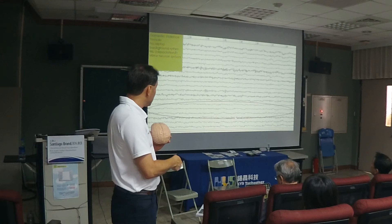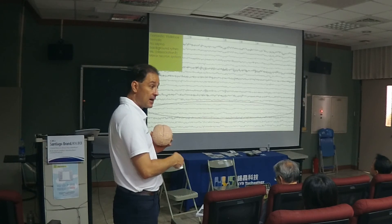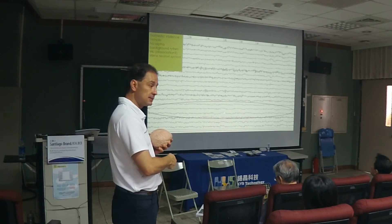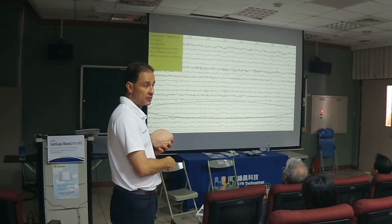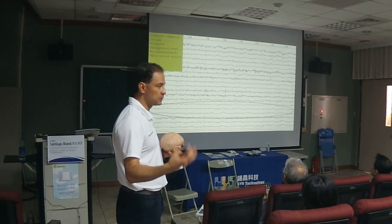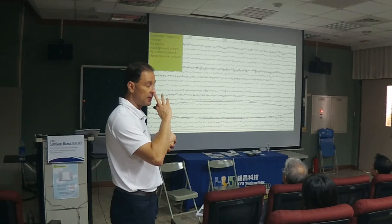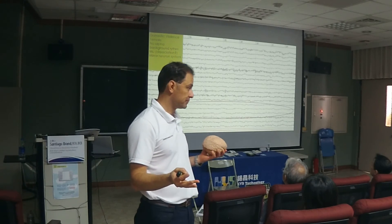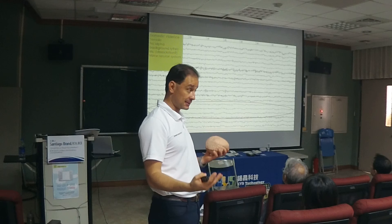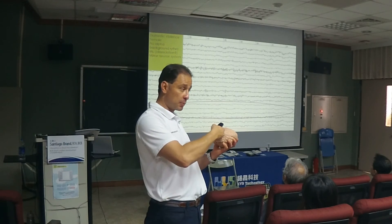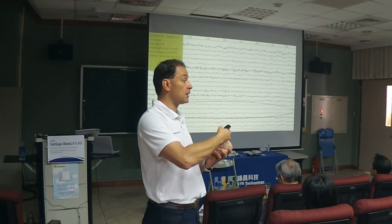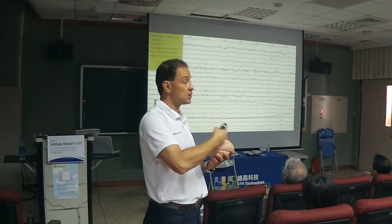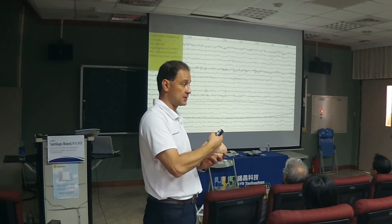If they close their eyes and the alpha doesn't go up and stays the same, you know there's a problem with the thalamus — the thalamus is the one that fires alpha, and it's dormant. The deep parts of the brain and the cortex are not communicating; the brain is fighting with itself.